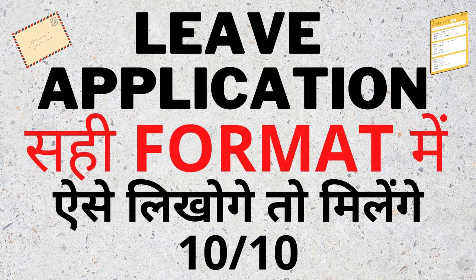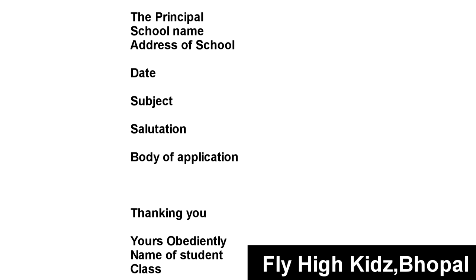Dear students, today we are doing application writing. First, let's learn the format. In the first line, write 'The Principal'. In the second line, mention the school name. In the third line, mention the address of the school. Then mention the date, followed by the subject, such as 'Application for Leave'. Then write the body of the application. At the end, write 'Thanking you' and 'Yours obediently'.